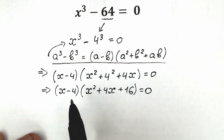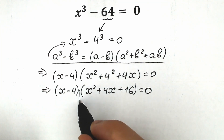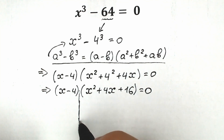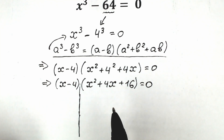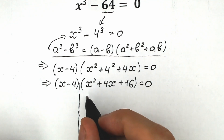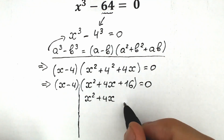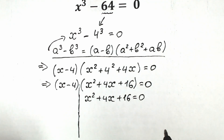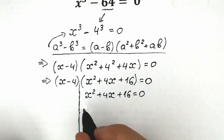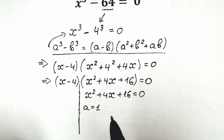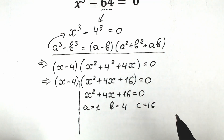We have a product of two parentheses equal to zero, which means each factor can equal zero. Let's start with the right parenthesis: x squared plus 4x plus 16 equal to zero. This is a quadratic equation. Our coefficients are a equal to 1, b equal to 4, and c equal to 16.